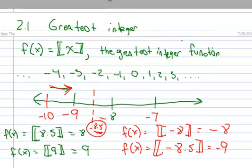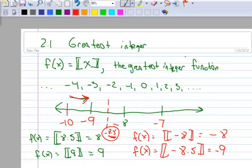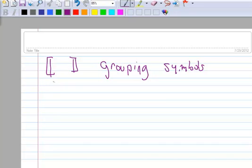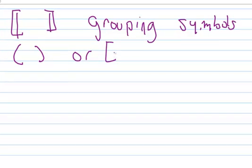Now, let's do just a little bit different example. Let's change our color here to something else. So, the greatest integer function, those things, can also act as grouping symbols. Grouping symbols is a fancy word for parentheses or brackets.